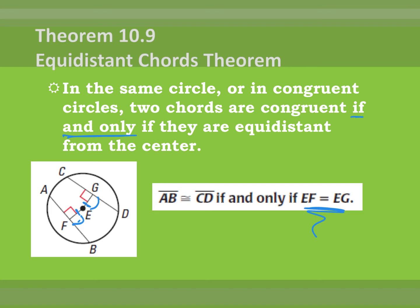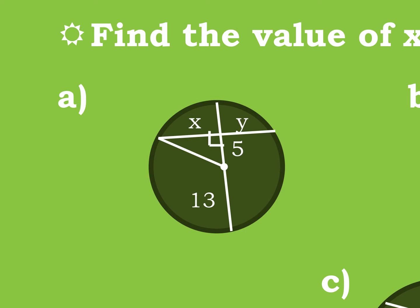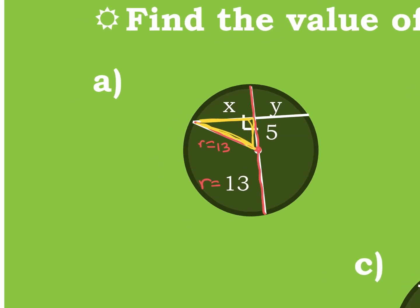Now we're going to apply the theorems we just learned, plus our special right triangles and Pythagorean theorem. Let's zoom in on example A. The 13 is the radius length going from the center to the side. There are actually three radii drawn in, all equal to 13. The one I need to focus on is the one forming the right triangle — I'll pull it out so we can see it better.